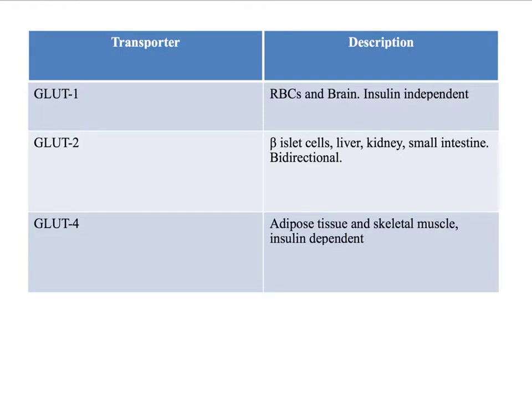In order for insulin to be secreted, glucose needs to go through a transporter. There are many different transporters in the body and we're going to discuss three. The glucose 1 transporter is found primarily in red blood cells and in the brain. It is insulin independent, meaning that insulin is not required for glucose to go into the cell. Red blood cells are solely dependent upon glucose for energy, whereas the brain in fasting states can use ketones for energy.